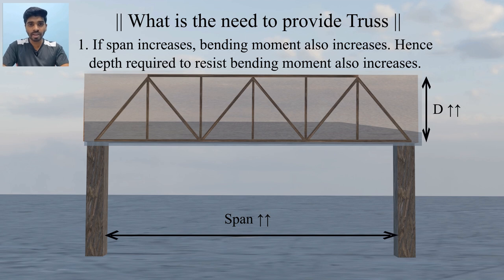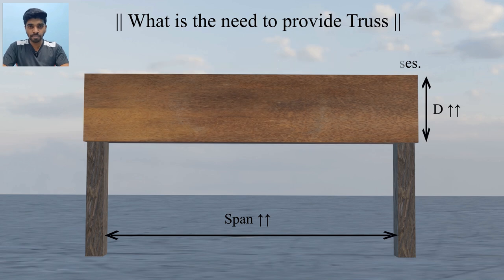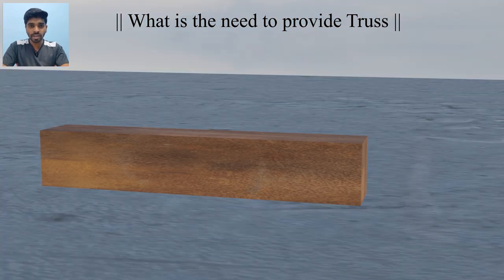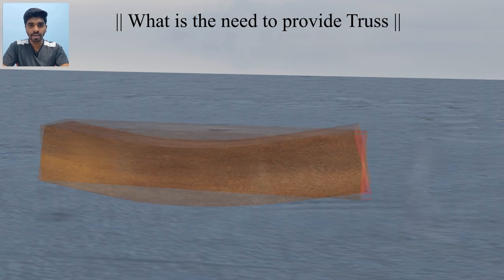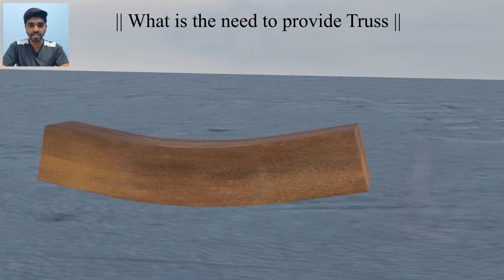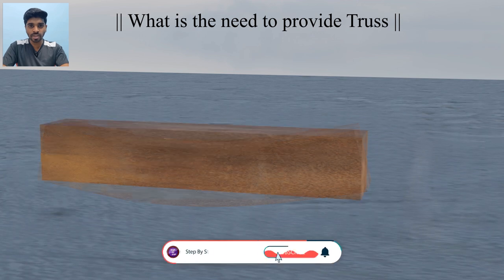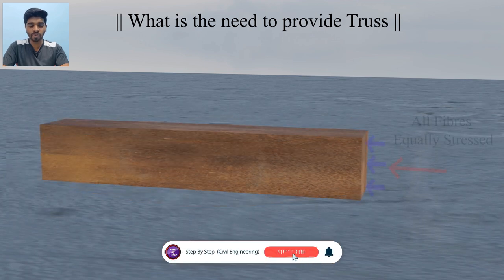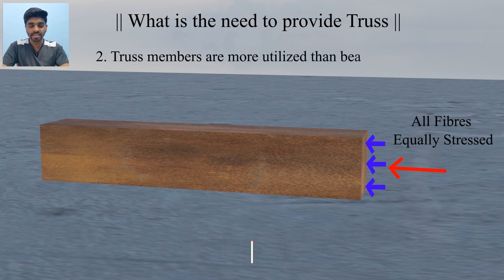The truss is better both from an economic and structural point of view. In beams, only the extreme top fibers are fully stressed, but the inner fibers don't experience as much stress. In a truss system designed for axial load, the whole structural member gets fully stressed and perfectly utilized. Hence, the truss system becomes more economical than the beam.